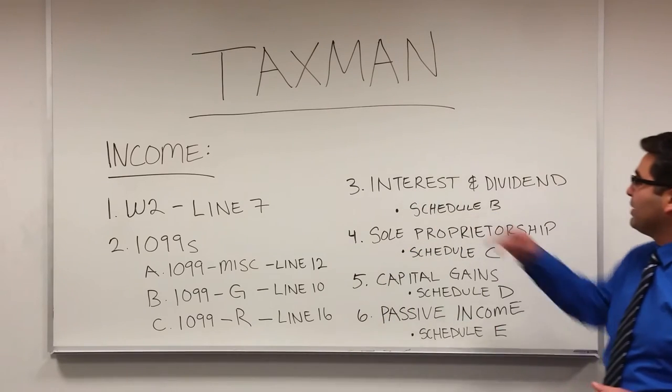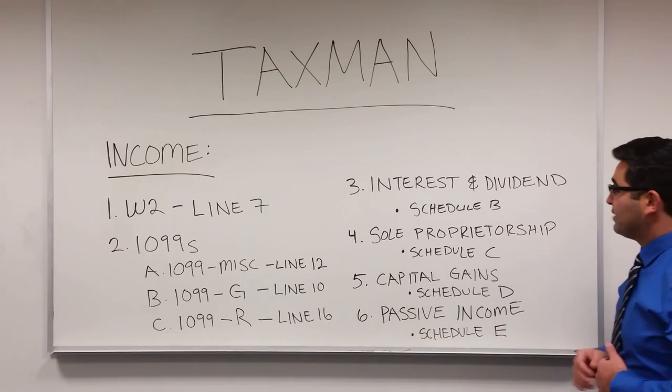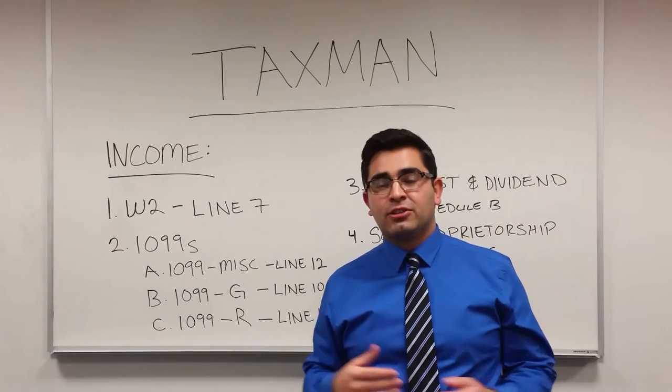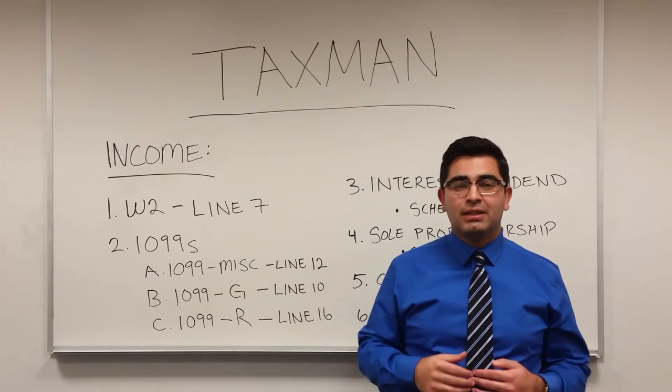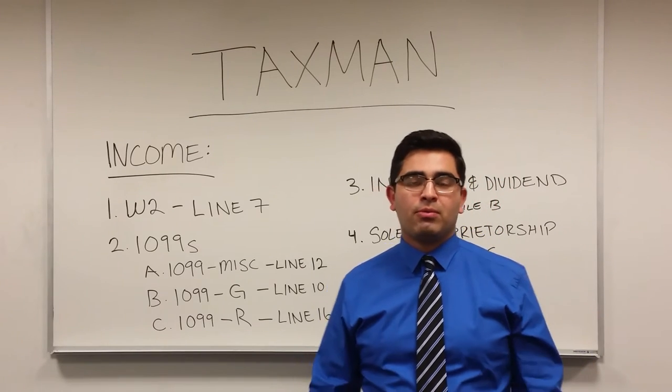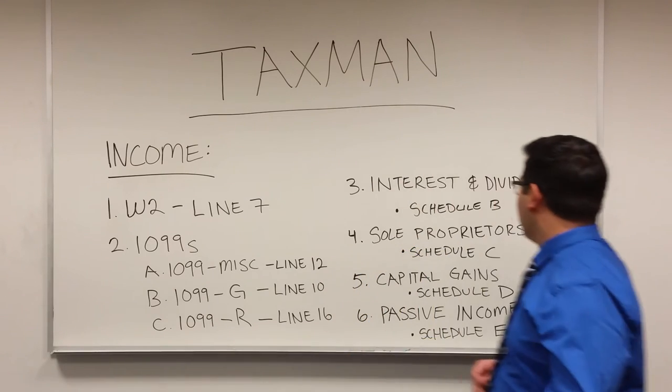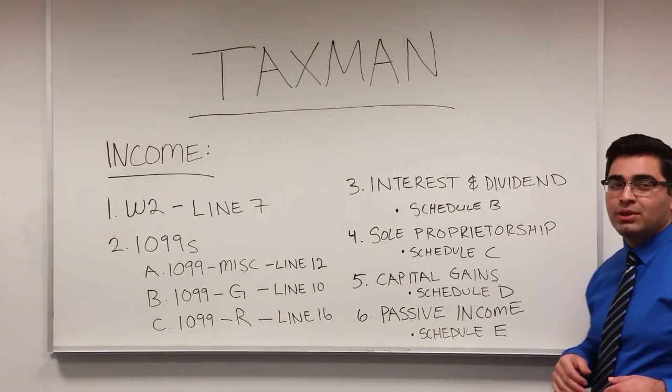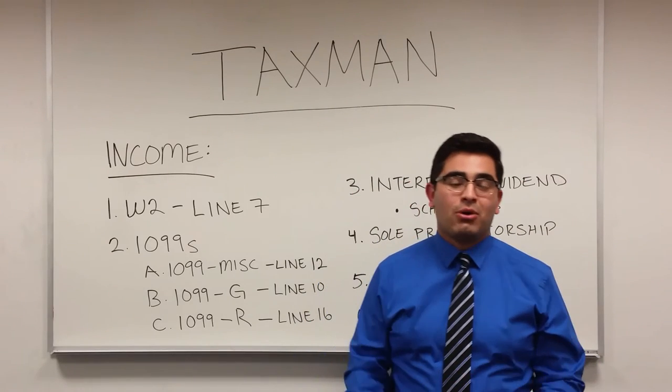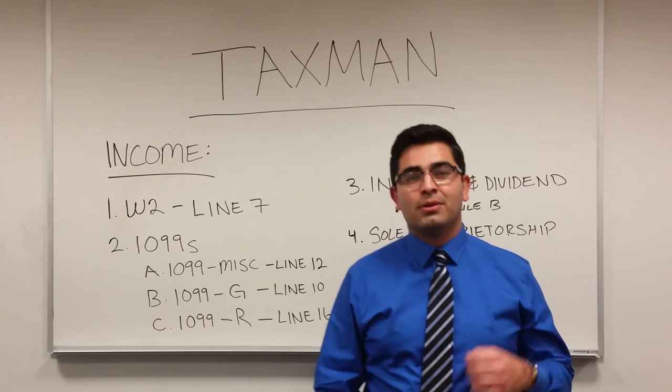Number three, we have interest and dividends, and that is reported on Schedule B. If you have a financial instrument such as a CD or a bond and receive interest income throughout the year, that will be reported on Schedule B. If you own stock and they issue a dividend throughout the year, that will also be reported on Schedule B.